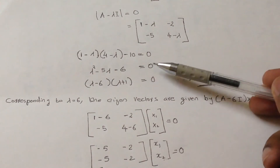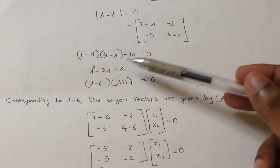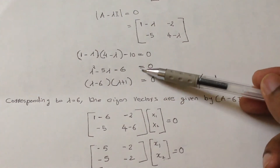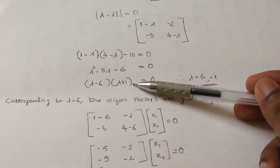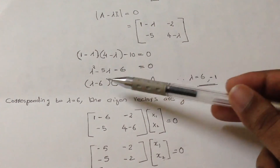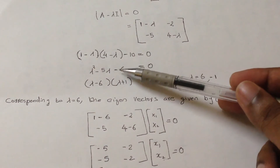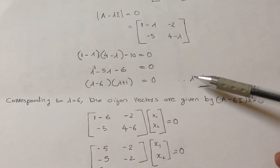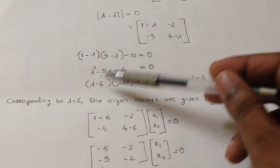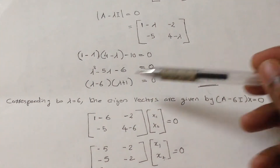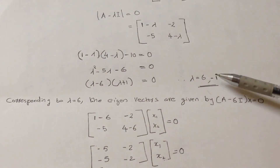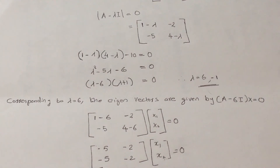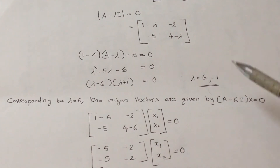Solving this, lambda squared minus 5 lambda minus 6 can be factored as (lambda minus 6)(lambda plus 1) equals 0. So the eigenvalues are lambda equals 6 and lambda equals minus 1.